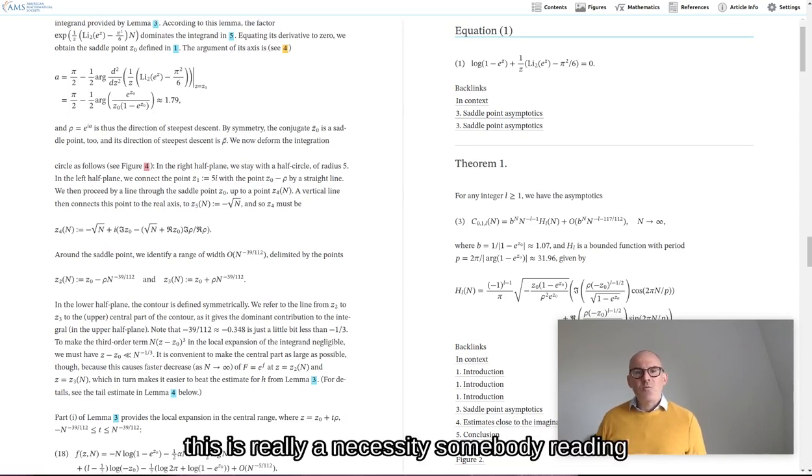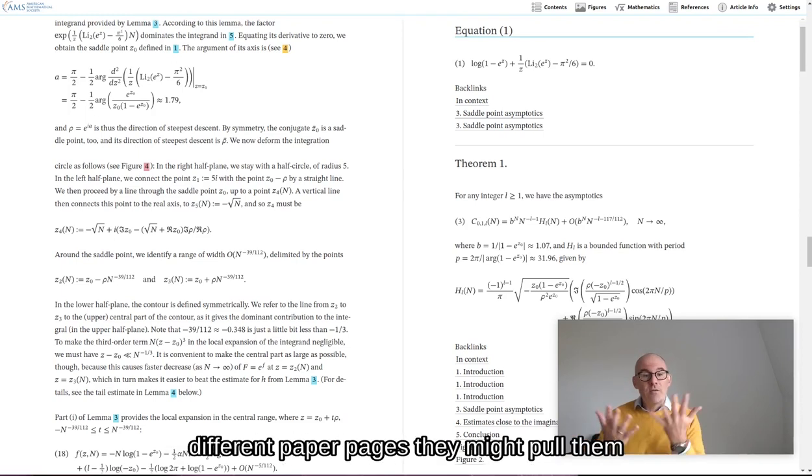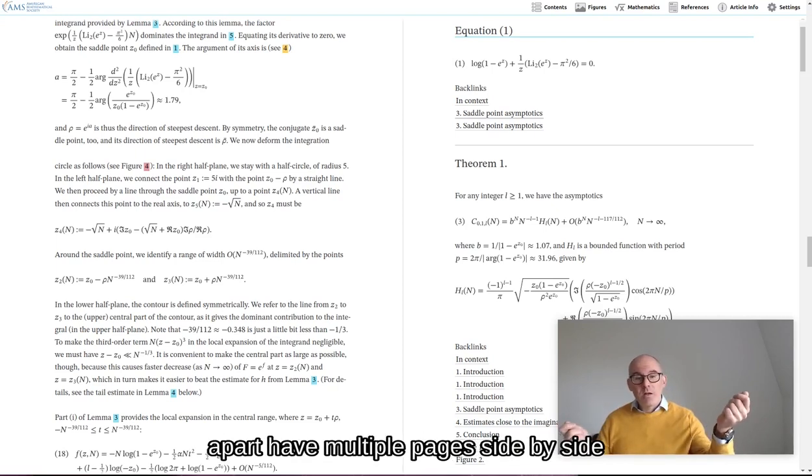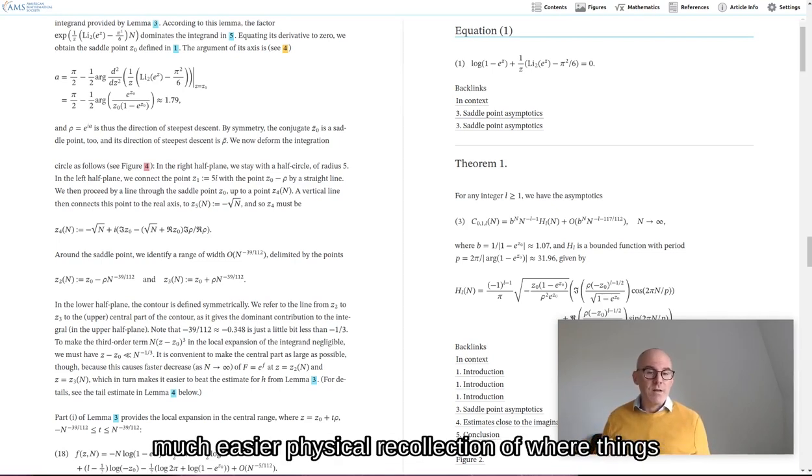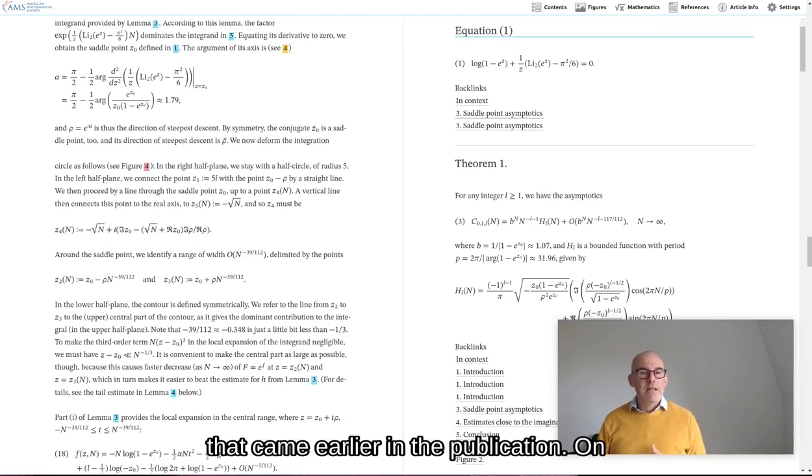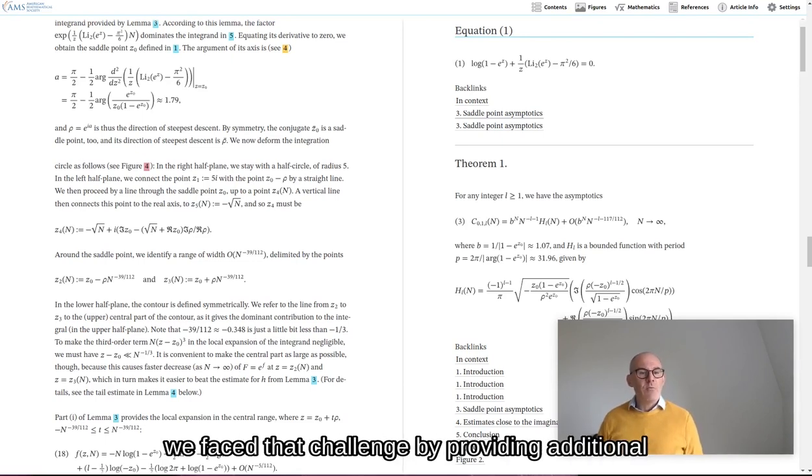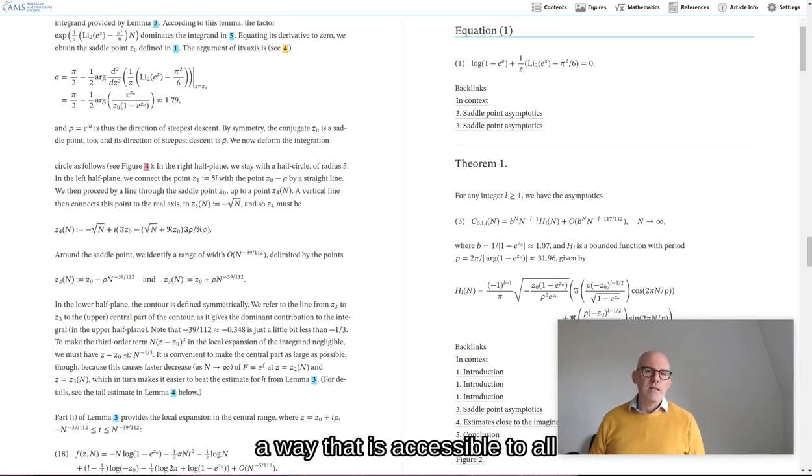Again, this is really a necessity. Somebody reading a printed publication might simply organize the different paper pages. They might pull them apart, have multiple pages side by side, and all of this gives them a much easier physical recollection of where things are and a much easier time looking something up that came earlier in a publication. On the web, that is a challenge and we face that challenge by providing additional means and of course providing them in a way that is accessible to all readers.